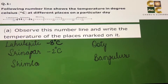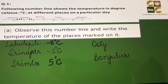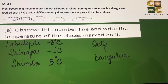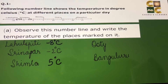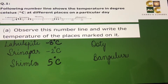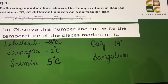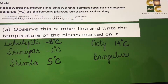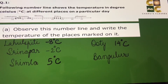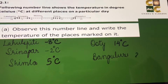If we go to the positive side, Shimla is marked at number 5, so Shimla's temperature is 5 degrees Celsius. Ooty is after 10 — counting 11, 12, 13, 14 — so Ooty is 14 degrees Celsius. Bangalore is after 20 — counting 21, 22 — so Bangalore is marked at 22 degrees Celsius.